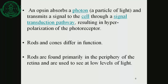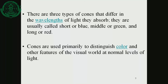The rods and cones differ in function. The rods are found primarily in the periphery of the retina and are used to see at low levels of light. There are three types of cones that differ in the wavelengths of light they absorb - they are usually called short or blue, middle or green, and long or red. The cones are used primarily to distinguish color and other features of the visual world at normal levels of light.